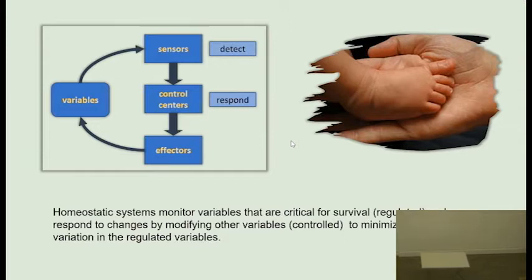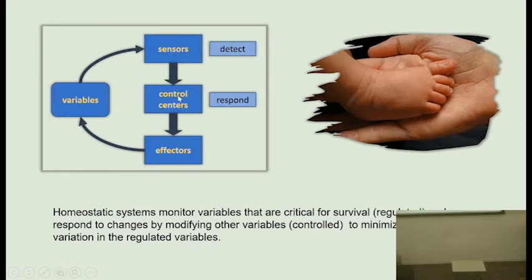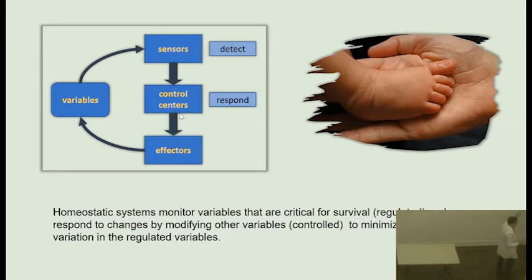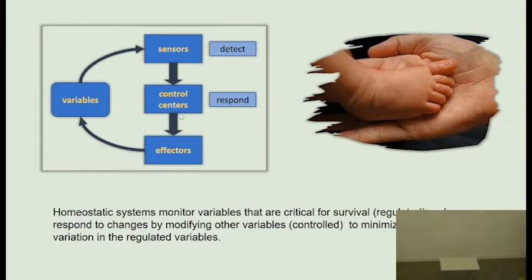The sensors detect variations in regulated variables and send this information to the control centers — endocrine and nervous system — and they decide what to do. For that, they activate effectors: sweat glands, endocrine glands, muscles. That will modify the initial variable that stimulated the process, of course in the opposite direction. If it was going up, take it down; if down, take it up.